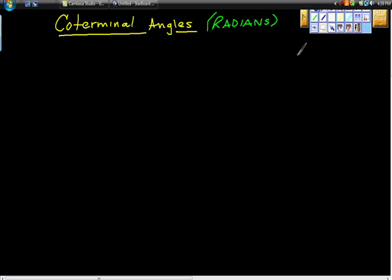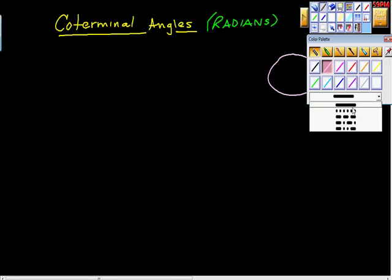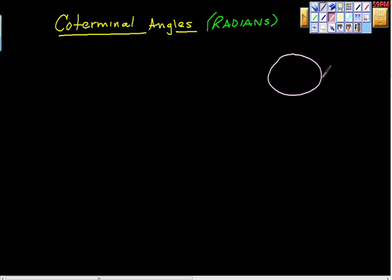Something really important about coterminal angles is making sure you realize that there are some rules here. One of the rules is that our angle must be in standard position. So here's our angle here.